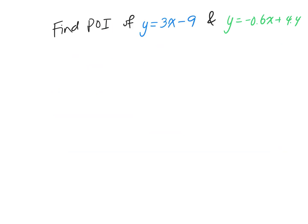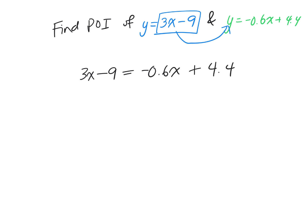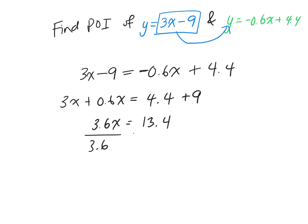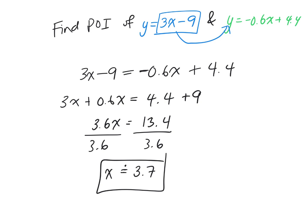Now we use substitution to find where the two lines intersect. Since y = 3x − 9 and y = −0.6x + 4.4, set them equal: 3x − 9 = −0.6x + 4.4. Rearranging: 3.6x = 13.4, so dividing both sides by 3.6 gives x ≈ 3.7.